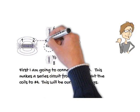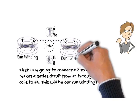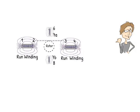First, I am going to connect number two to number three. This makes a series circuit from number one through the coils to number four. This will be our run winding.